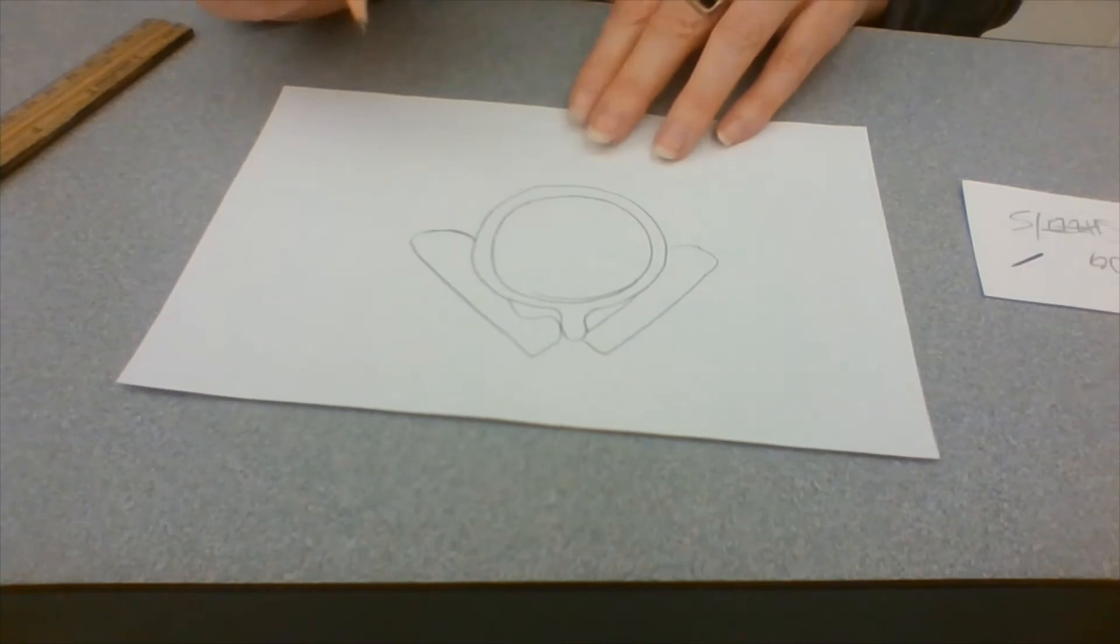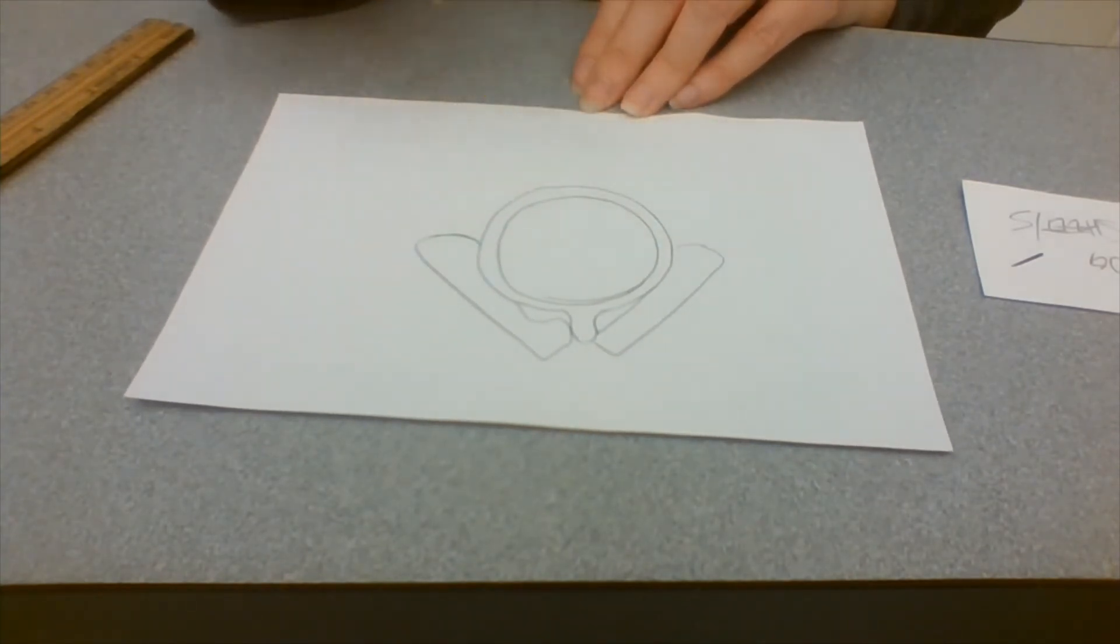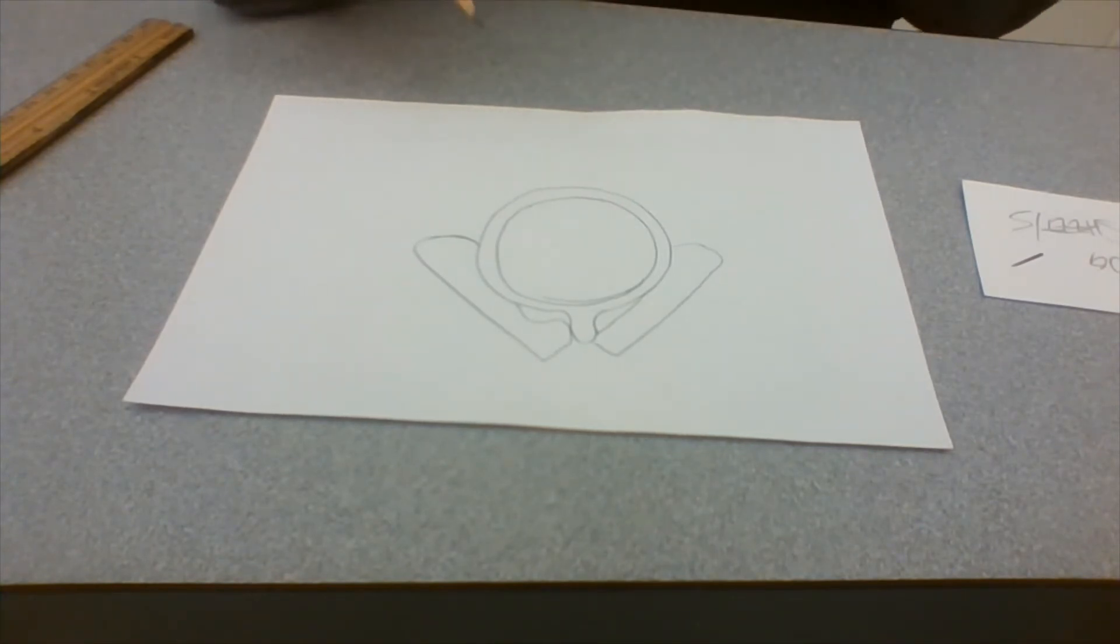When you're doing this, you want to use precision. So I probably should have used a compass to make that circle nice and round. And I would want to use a ruler to make all of my lines nice and straight, because these are going to be pretty simplistic drawings. So you want them to have a nice crisp appearance to them.